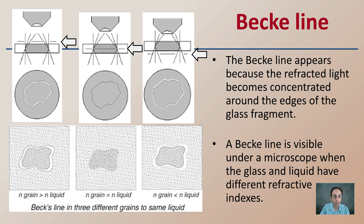If you look at the perimeter of the glass, the halo-like effect is located on the inside of that piece of glass. In contrast, if the liquid has a greater refractive index than the piece of glass, that same halo-like effect appears on the outside of the edges of the glass.